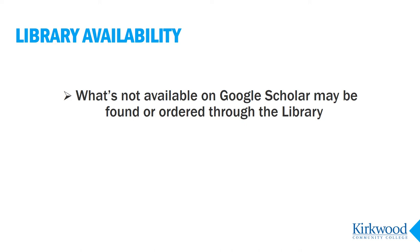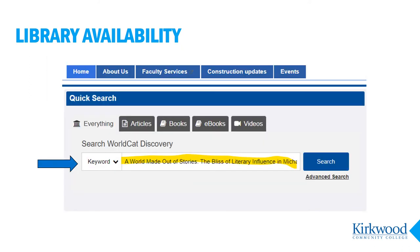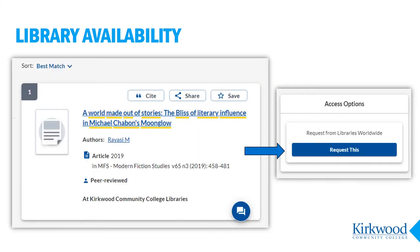Let's circle back to the library and services we provide. What do you do if you find a citation in Google Scholar but the full text isn't available, or the website it links to wants you to pay for it? That's when you head back to the library website. Let's say you want an article that came up in a Google Scholar search. If there's no link for the full text, copy the title, open a new tab in your browser, and go to the library homepage. Then paste the title into the search box and hit enter.